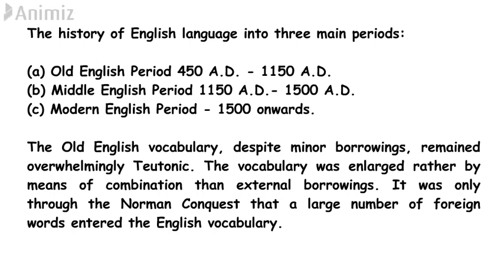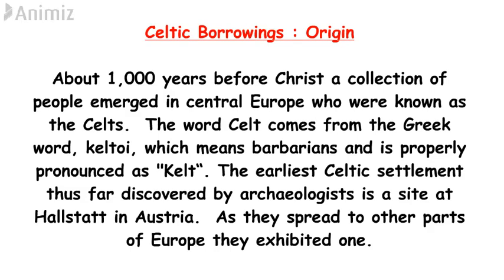About 1,000 years before Christ, a collection of people emerged in central Europe known as the Celts. The word 'Celt' comes from the Greek word 'Keltoi,' meaning barbarians, and is properly pronounced as 'Celt.' The earliest Celtic settlement discovered by archaeologists is a site at Hallstadt in Austria, though many historians also believe the Celts originally came from Ireland. For the purpose of this session, we focus on the fact that the earliest Celtic settlement was discovered in Austria.